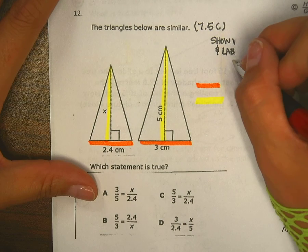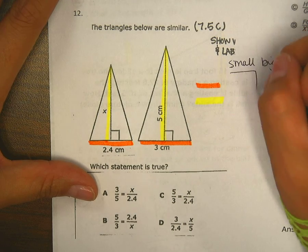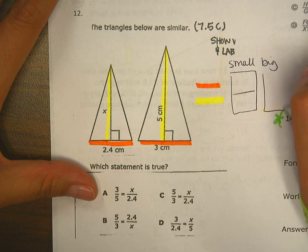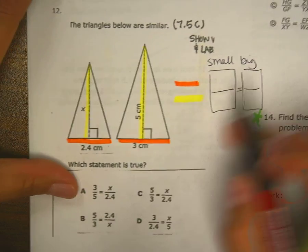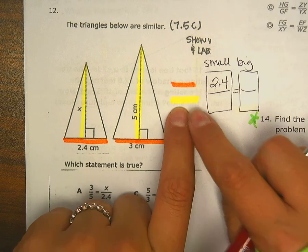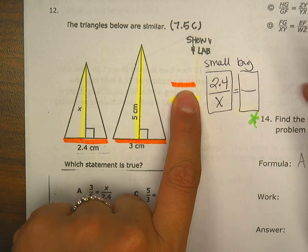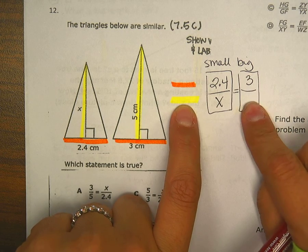So I've got small triangle and I'll do big triangle. Those are the names of my ratios. Orange small is 2.4, yellow small is x, orange big is 3, yellow big is 5.